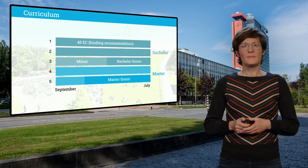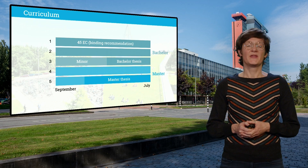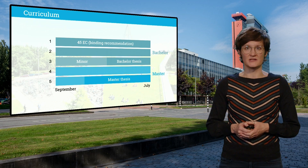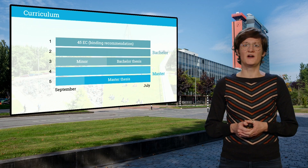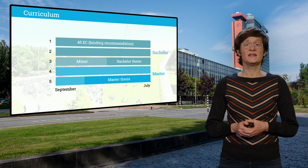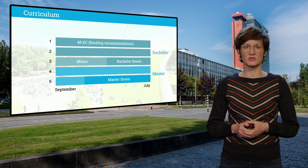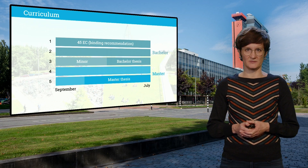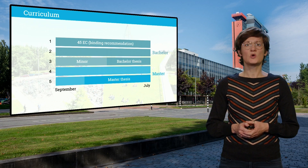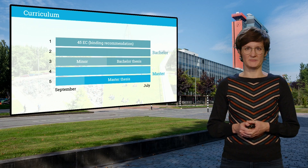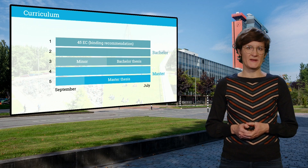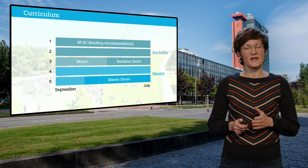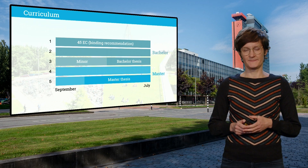Our bachelor's consists of three years. In the first year, you need to obtain 45 of the 60 ECTS in order to continue in the second year. This is called the binding recommendation. I will explain what you can expect in the first year in the next slide.